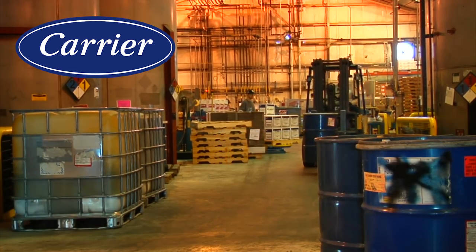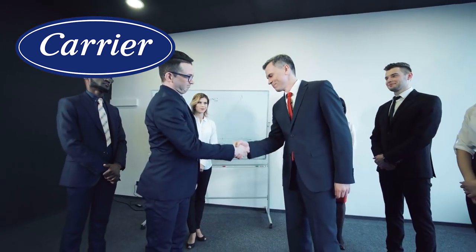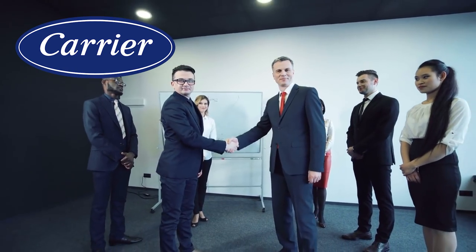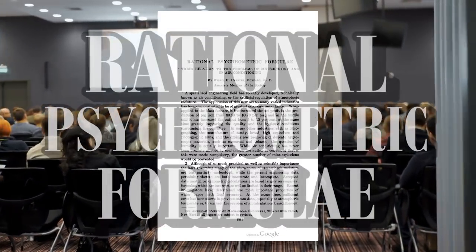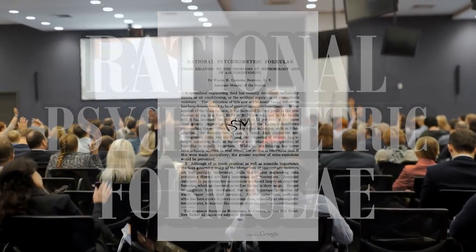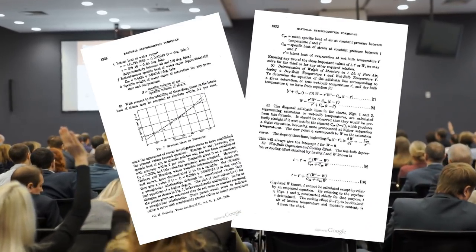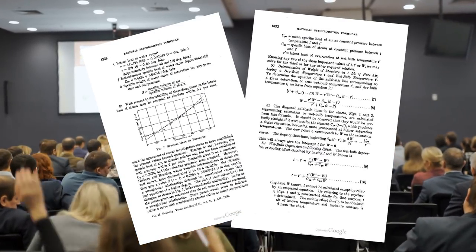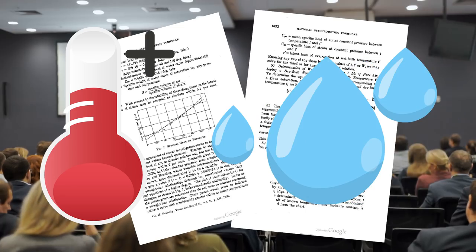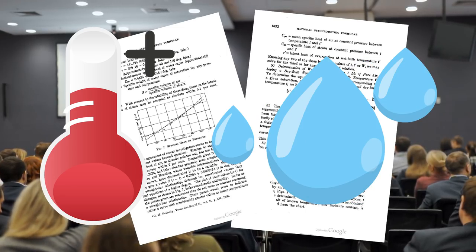Carrier's work in the air conditioning field culminated in one of the most prolific documents ever crafted on the subject. Titled Rational Psychrometric Formulae, Carrier presented the document to the American Society of Mechanical Engineers in late 1911. His charts presented in this document were the first to accurately correlate temperature and humidity in the design of AC systems.